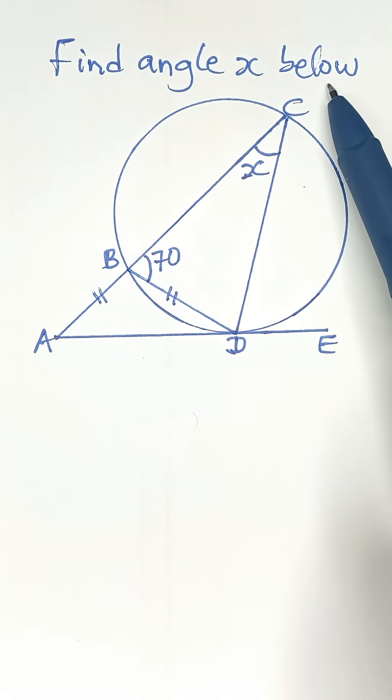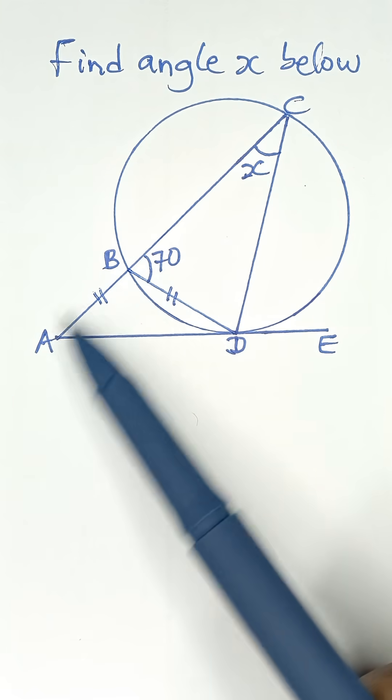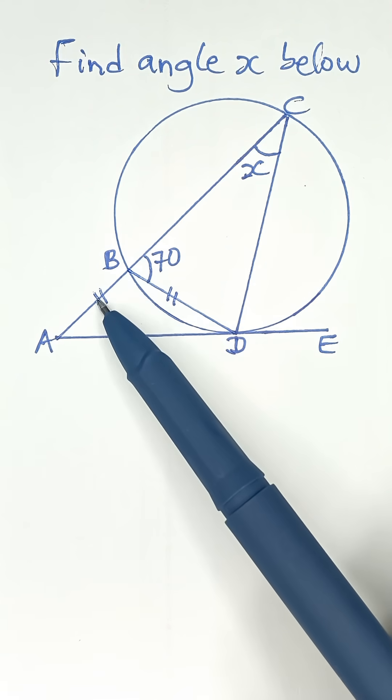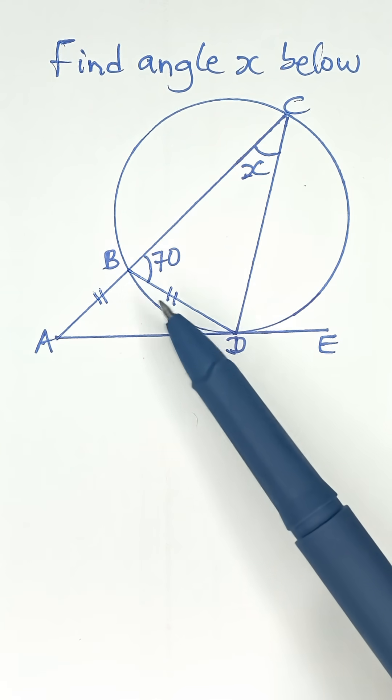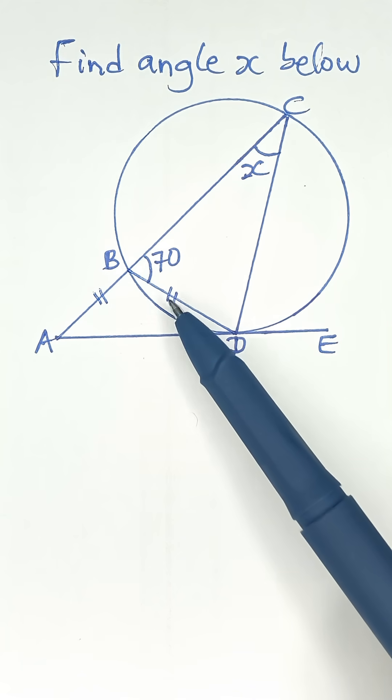To find angle X below, let's look at triangle ABD. In triangle ABD, we have this side equal to this side, so the triangle is an isosceles triangle.